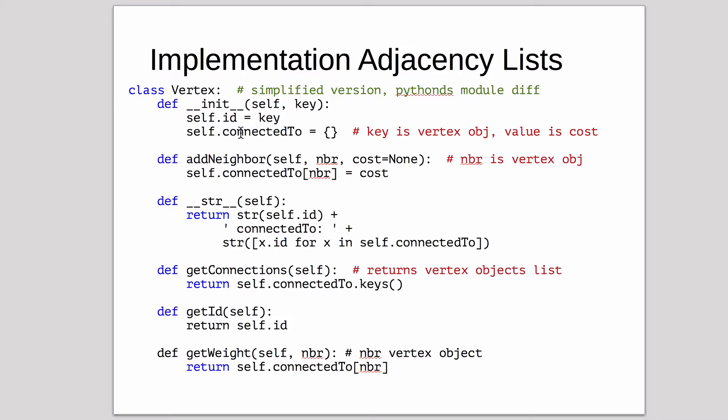This is going to add something to the connected to list. It takes a neighbor, which is a vertex object, and it takes optionally a cost. So it sets the connected to new vertex object equal to the cost. If the neighbor already exists, it doesn't check for that. It just replaces the cost for that vertex object.